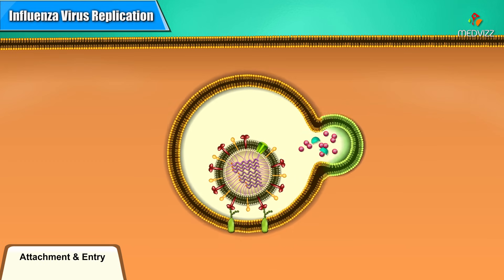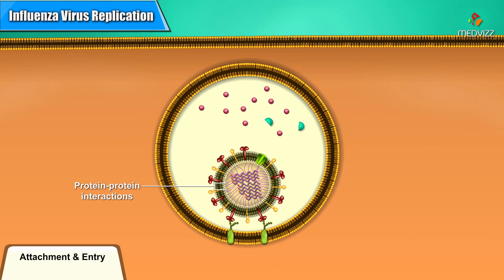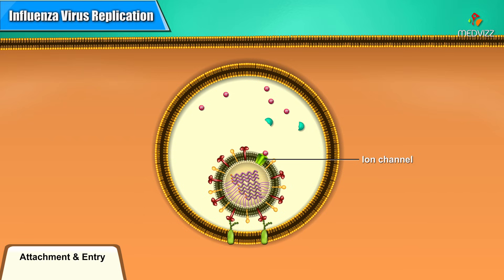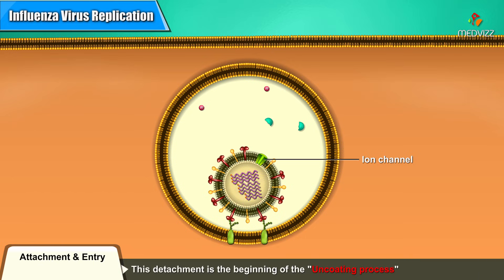Unfortunately for the host, the virus uses the acidity to its advantage. An ion channel allows protons to enter the virus. The acidity inside the viral particle disrupts protein-protein interactions, causing matrix proteins to detach from proteins covering the viral RNA genome — the beginning of the uncoating process. It's interesting to note that one type of anti-influenza drug blocks this ion channel.